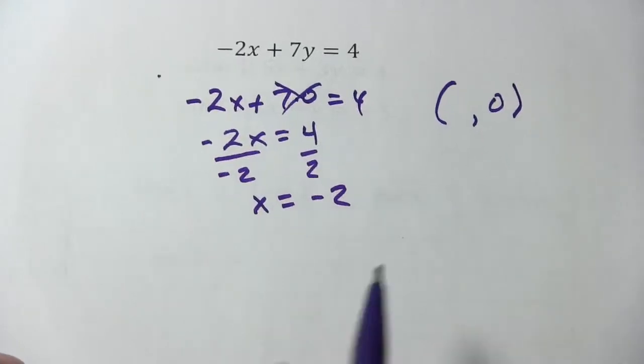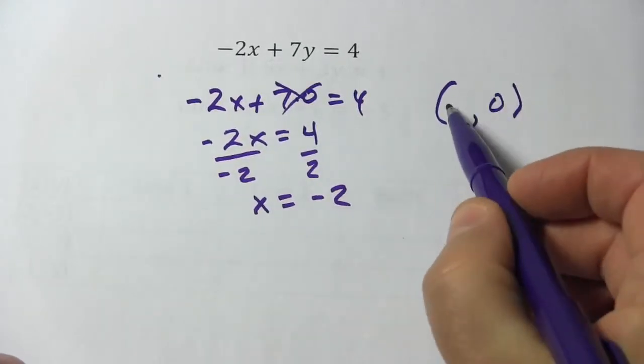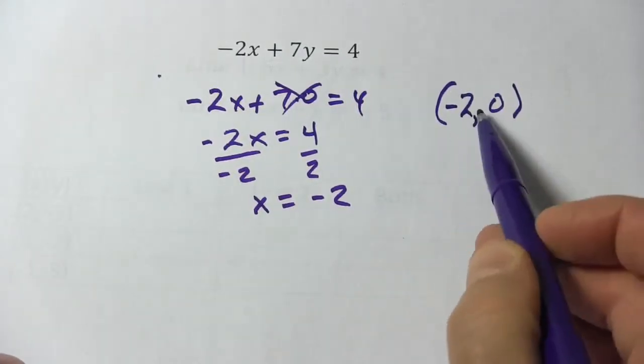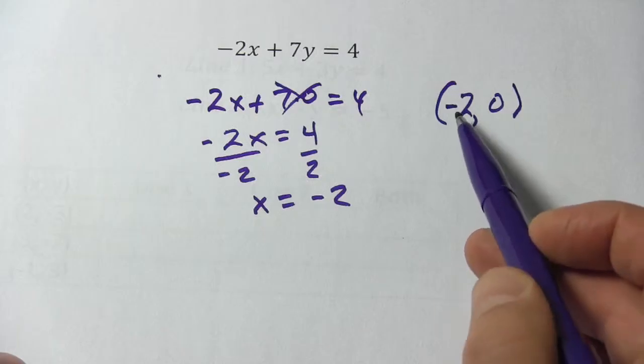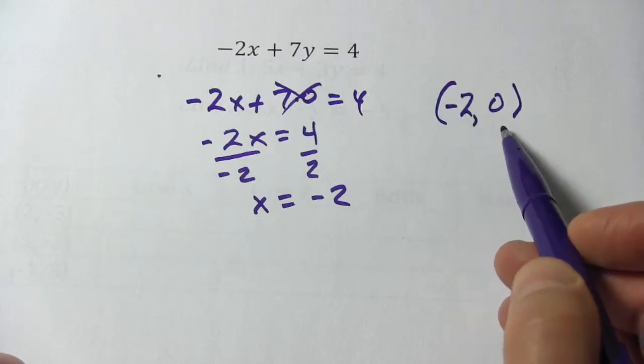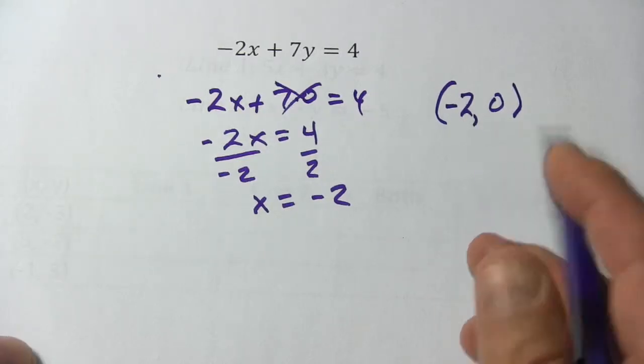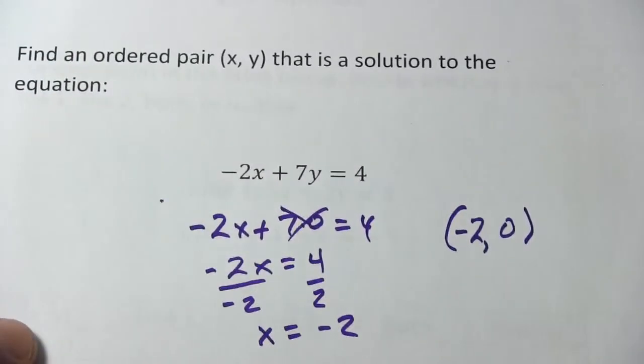So our ordered pair is the x number, negative two, comma, the y number, zero. So this is negative two, zero. And that is a solution to this equation.